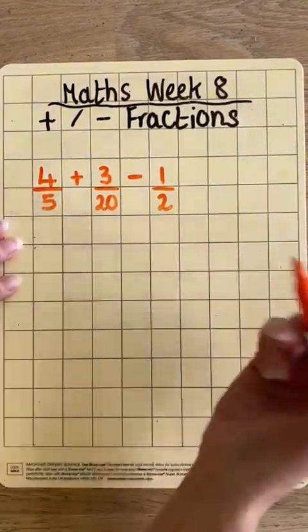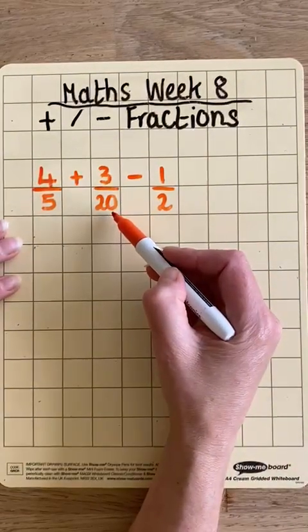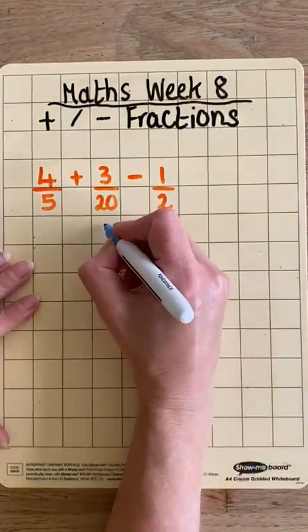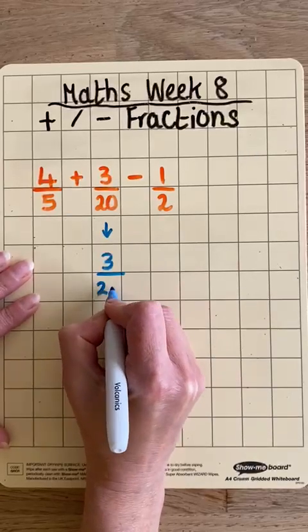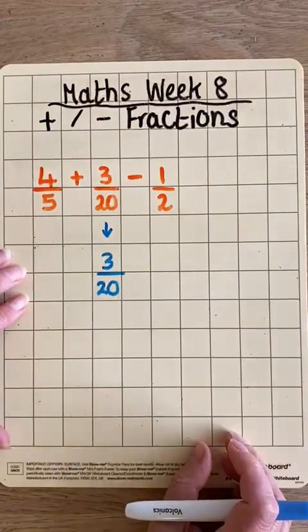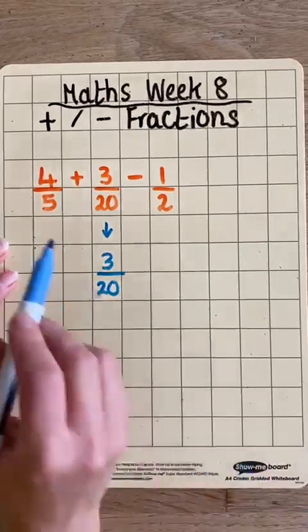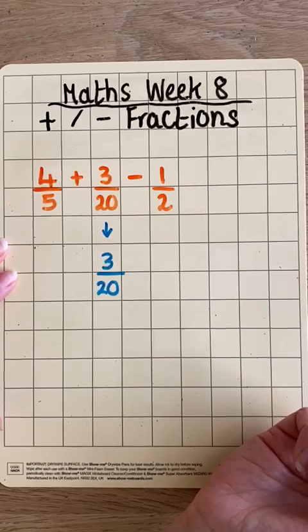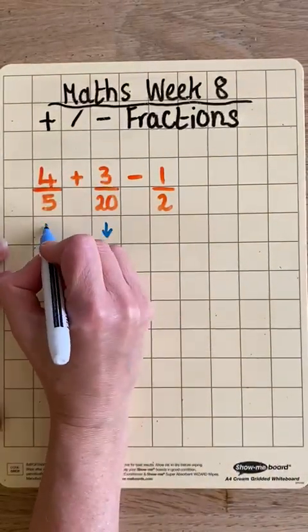We're going to choose 20 as our common denominator. As this one already has 20 as its denominator, this one will stay the same. I'm going to transfer that down here and rewrite the rest of the sum with twentieths as my denominator. It means changing these other fractions into equivalent fractions with 20 as the denominator, so let's see how we do this.